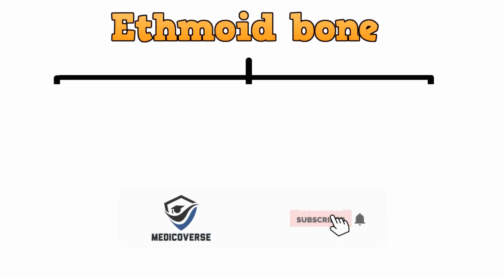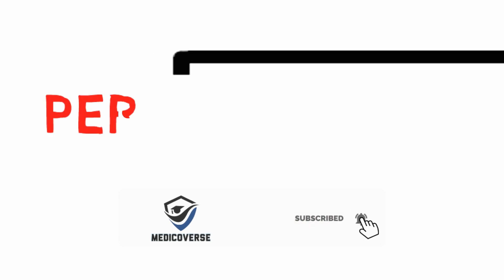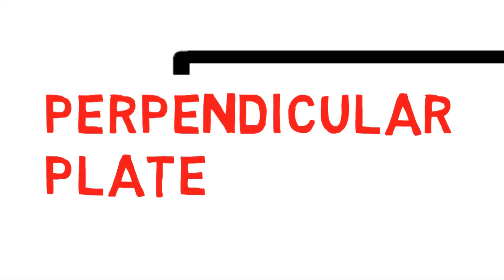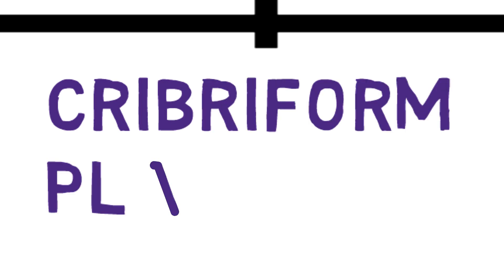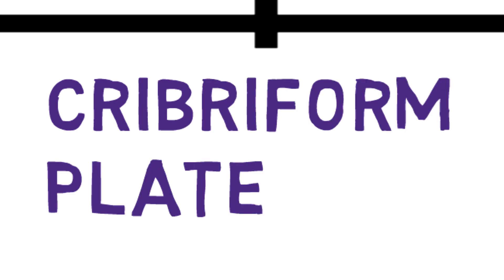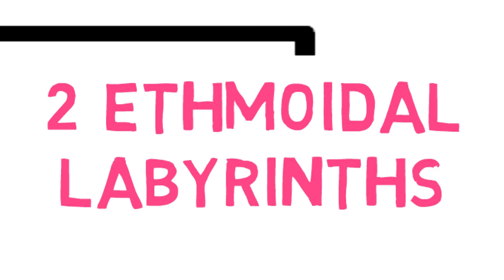Coming to the parts of the ethmoid bone — it is made up of three parts, which include the perpendicular plate, cribriform plate, and two ethmoidal labyrinths. Let's discuss each of these; first we will discuss the features, and then we will see their locations.